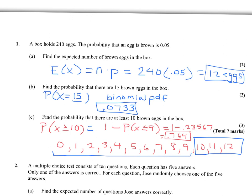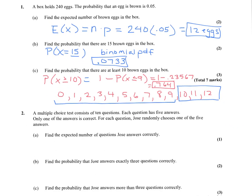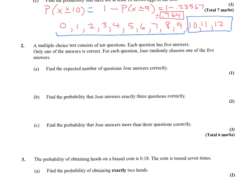That's what we have to do whenever the problem is not in less than or equal to form — we find a way to work around it. Now let's look at another example. The first part says: find the expected number of questions Jose answers correctly. Before using the formula E(X) = N times P, we should verify it's a binomial distribution.